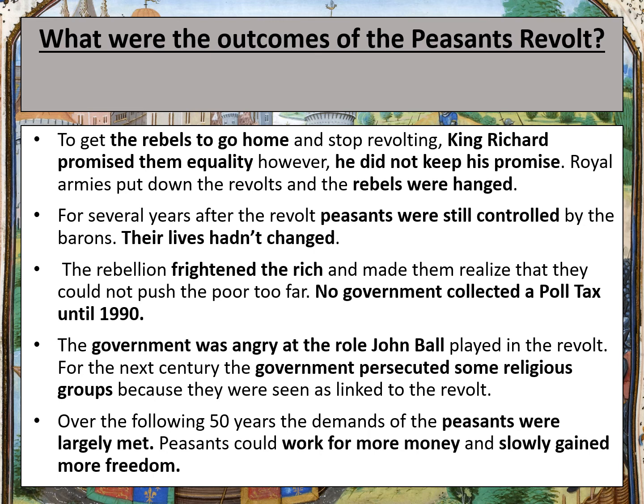However, the government was very angry at the role that John Ball played in the Peasants' Revolt. Ball belonged to a group of Christians called the Lollards and they believed that churchmen should live simple lives and the Bible should be translated into English. The Lollards were challenging the power of the church, wanting their money to be spread amongst the poor, and they were also very critical of the king. For the next century, the government persecuted the Lollards because they were seen as linked to the rebellion. John Ball was a leader in the Peasants' Revolt and was responsible for spreading the message of equality to the peasants, inspiring them to take part in the revolt. This was a negative outcome of the Peasants' Revolt as the government started to persecute the Lollards and other religious groups.